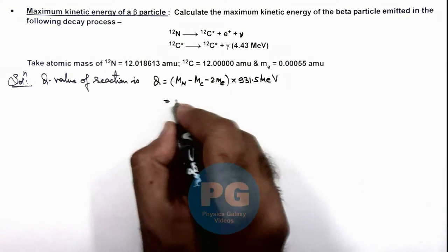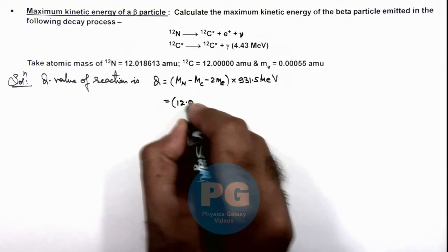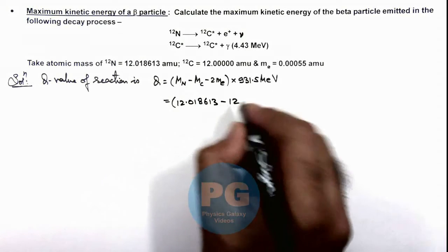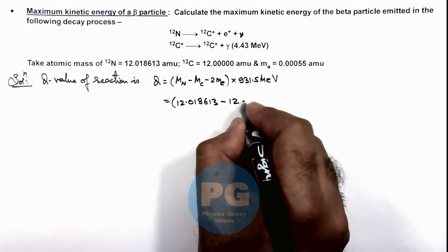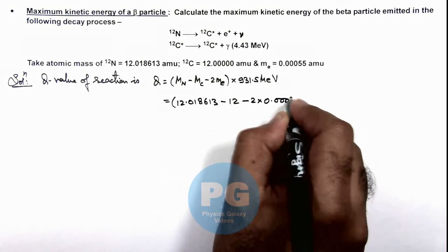If we substitute the values, the mass of nitrogen is 12.018613 minus 12.000000 minus 2 multiplied by 0.000055 amu multiplied by 931.5 MeV.